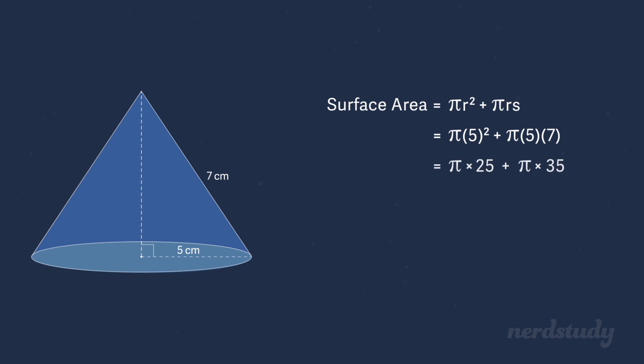If we simplify, we get pi times 25, or 25 pi, plus pi times 35, or 35 pi. Therefore, 25 pi plus 35 pi equals 60 pi, which is roughly, when we round it to the tenth digit, 188.5 centimeters squared. Great.